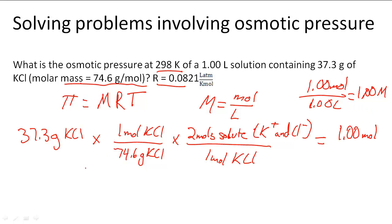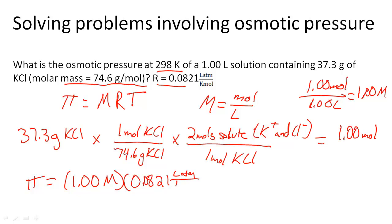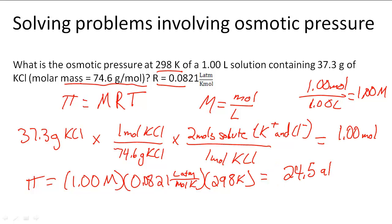Now to figure out this problem, we do 1.00 molar times 0.08206 L·atm/mol·K, and then we multiply that by the temperature which is 298 Kelvin. When we do that, we get that the pressure is 24.5 atmospheres, and that is the answer to our problem.